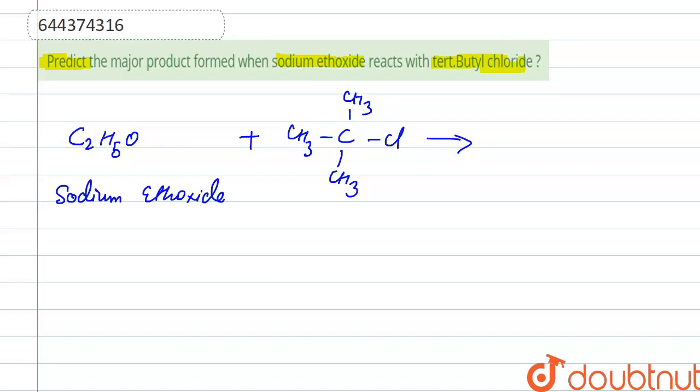If we write that: C2H5ONa plus the tertiary butyl chloride, and here it is Cl minus. From here, this bond breaks and this bond breaks from here, and NaCl gets released. This Na gets attached with Cl, and C2H5O attaches with carbon.